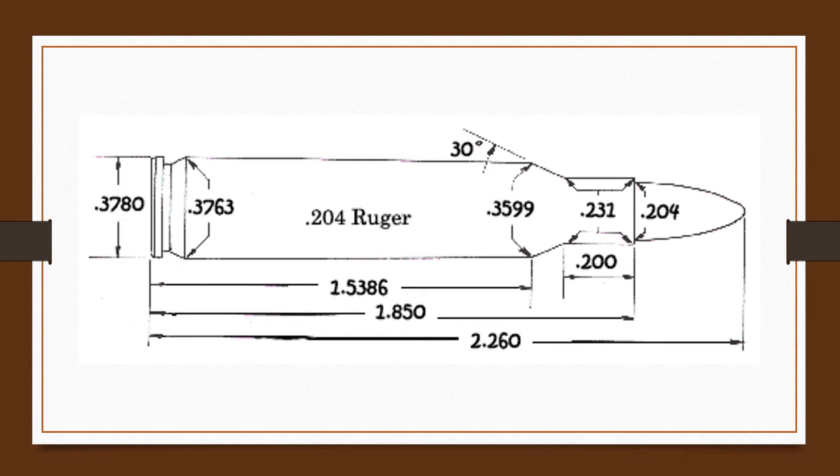With the Ruger and Dakota rifles chambered in the 204 Ruger, a former contributing editor found it to be accurate, low recoil, and superbly suited for long range varminting.